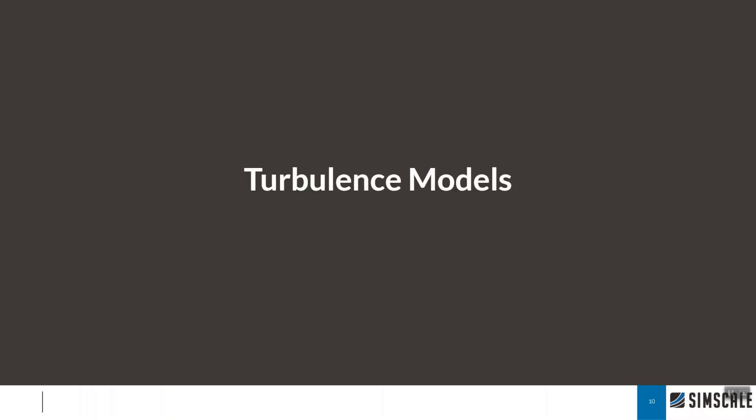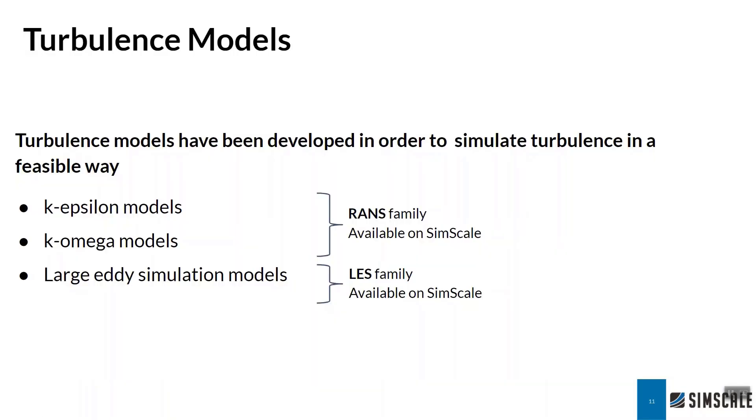So what are the different turbulence models that we can use in a simulation? There are two main schools of turbulence model. The first would be your RANS family of models, standing for Reynolds Averaged Navier-Stokes, and the second subset would be the LES family, or the large eddy simulation.